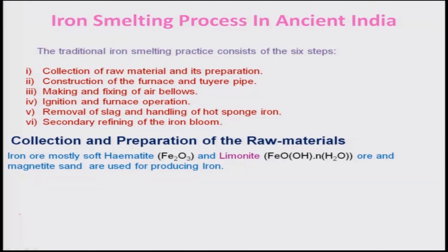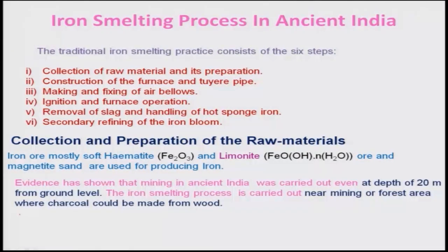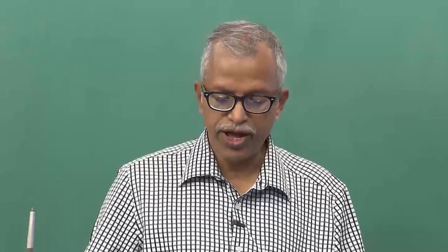There are several ores like hematites, limonites that were being used, and also some magnetite sands were used for the production of iron. Evidence shows that mining in ancient India was carried out even at a depth of 20 meters from the ground level. Generally, people wherever they found iron ore would try to smelt it there itself, or they could choose another place, particularly forest areas where wood charcoal would be available.